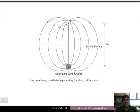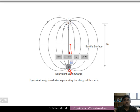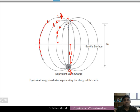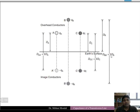If we consider an opposite charge minus q at the same height h below the earth surface, while the positive charge plus q is at height h above the earth surface, then the electric flux lines originating from the positive charge terminate not only at the earth surface but below it where the negative charge is present. The total distance between the charges will be 2h.